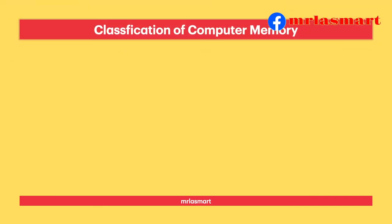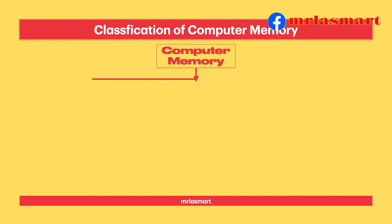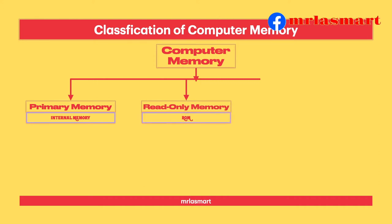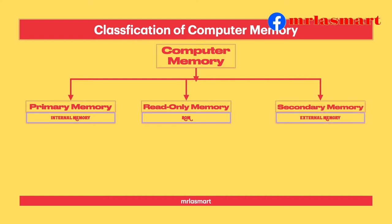Classification of computer memory: Computer memory includes Primary memory (internal memory), Read only memory (ROM), and Secondary memory (external memory).